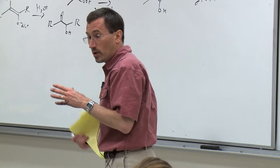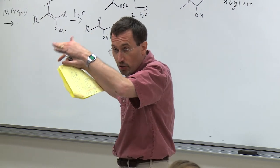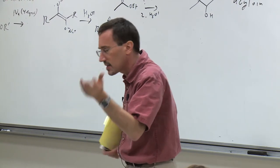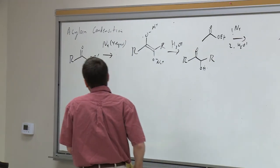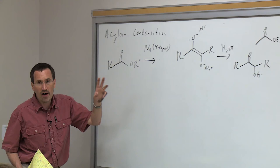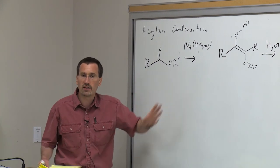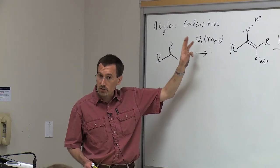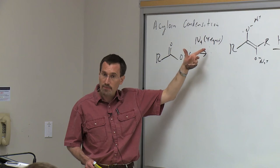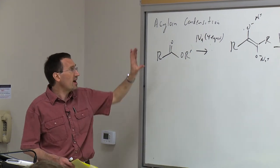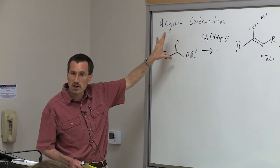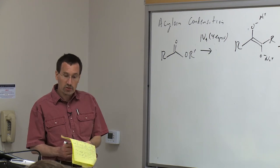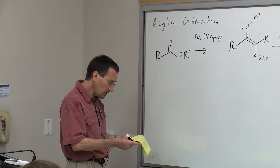In the acyloin condensation we're going from an ester. An ester is automatically two higher in oxidation state than an aldehyde. We're going from an ester to an alpha-hydroxycarbonyl—so there is a reductive process. Sodium has an electron. Using four molecules of sodium, we pump four electrons into the system, effectively reducing both esters down to the aldehyde oxidation state.